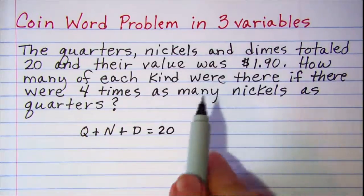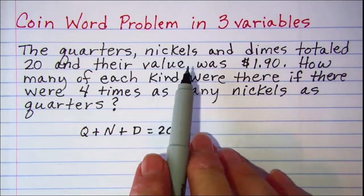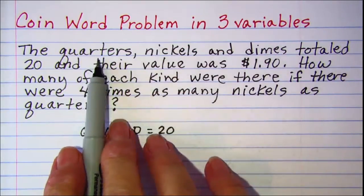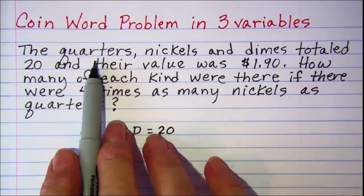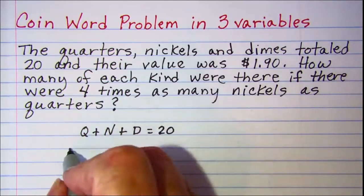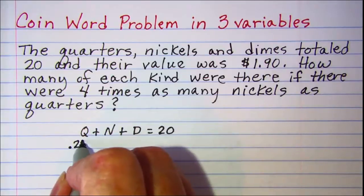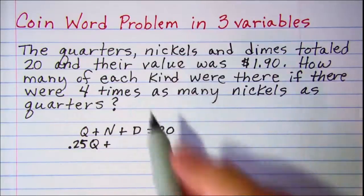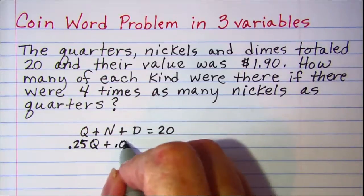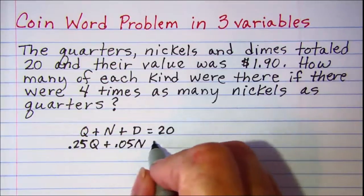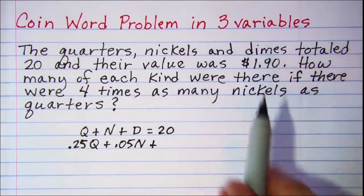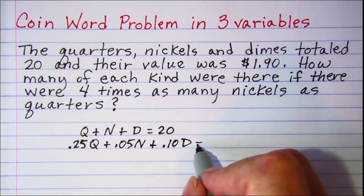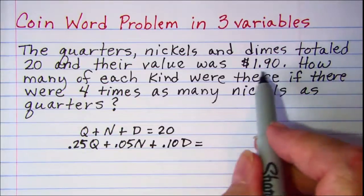The other type of equation is dealing with the value of those coins and we know that quarters are worth 25 cents. So we'll take 0.25 times the number of quarters plus, and then nickels are worth 5 cents, so 0.05 times the number of nickels plus, and then dimes are worth 10 cents, so 0.10 times the number of dimes, and that has to equal this value, $1.90.